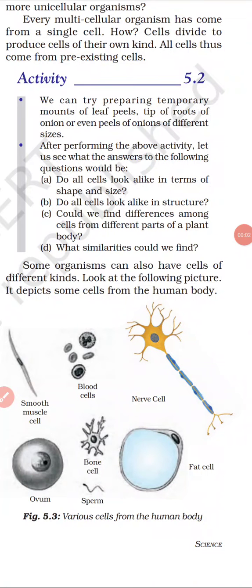Hello everyone, welcome to my channel. Today we'll do activity 5.2 given in the NCERT science book of grade 9. Let's get started. In this activity we can try preparing temporary mounts of leaf peels, tip of roots of onion, or even peels of onions of different sizes.